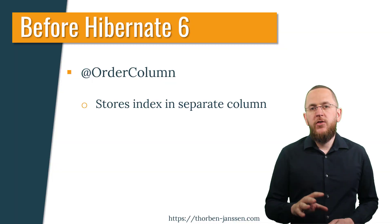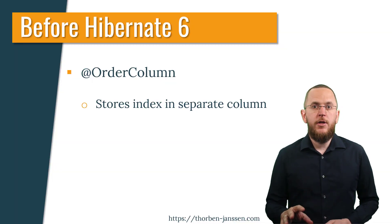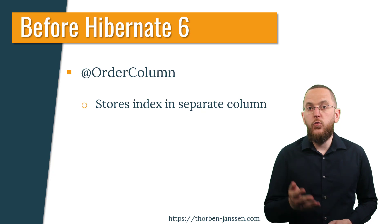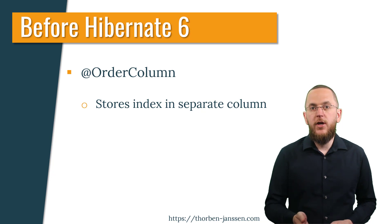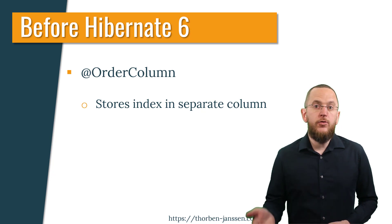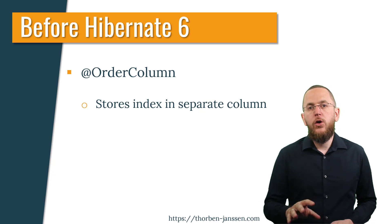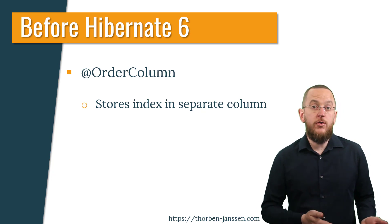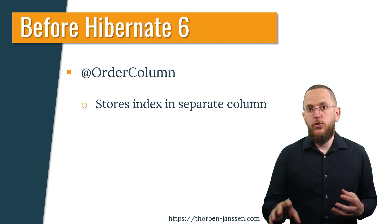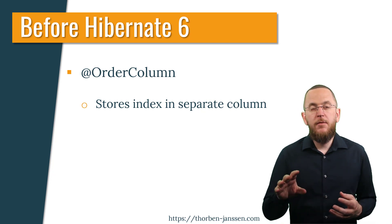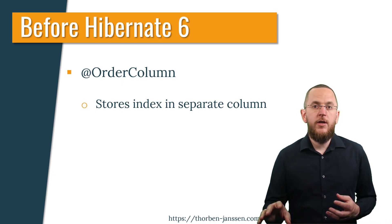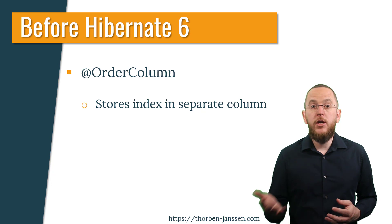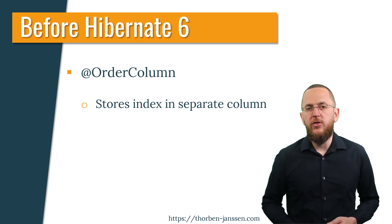Until Hibernate 6, you had to add an OrderColumn annotation to your element collection, one-to-many association, or the owning side of your many-to-many association to persist the order of your Java Util List. Hibernate then persists the position of each element in a separate column and manages the index of all elements during all insert, update, and delete operations.